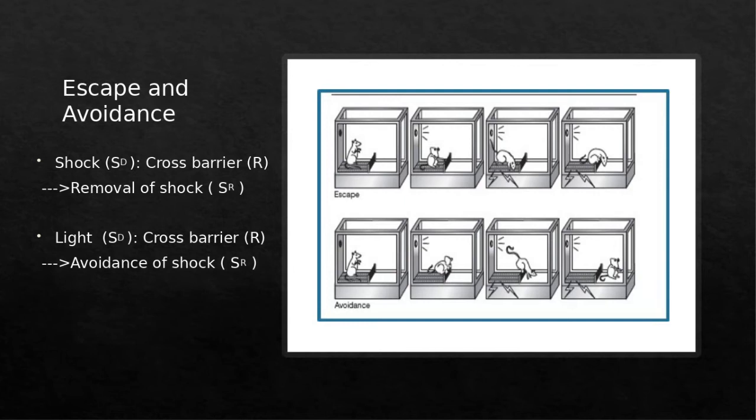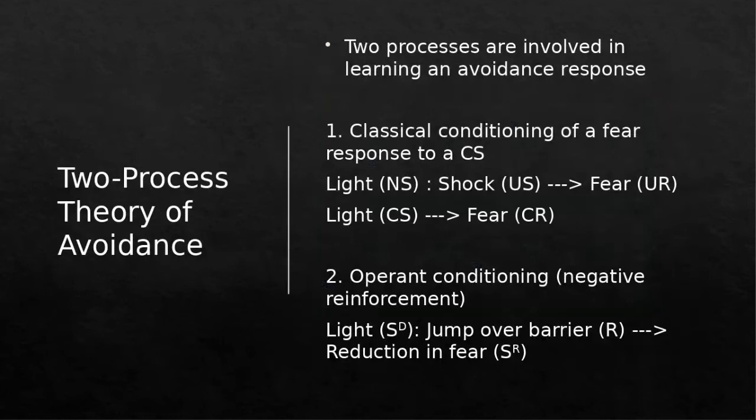Next, the mouse will learn to avoid. The light illuminates before the mouse is even shocked, and the mouse jumps over the barrier onto the part of the floor that's not electrified, so the behavior allows it to avoid the shock. The light serves as a discriminative stimulus letting the mouse know that if it performs the response of jumping over the barrier, it will be reinforced by totally avoiding the shock. First learns escape, then learns to avoid.